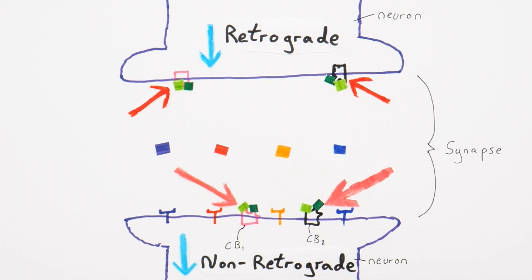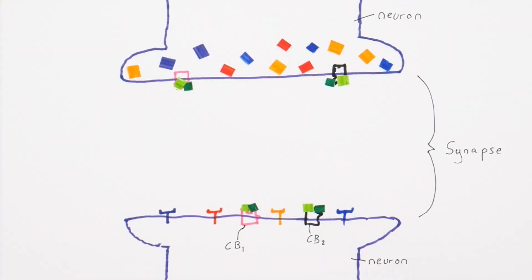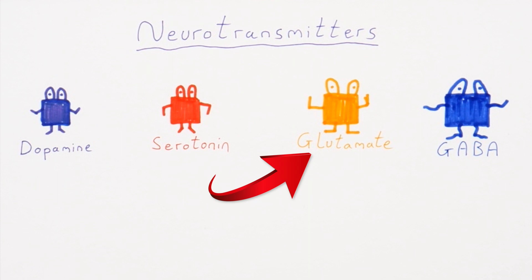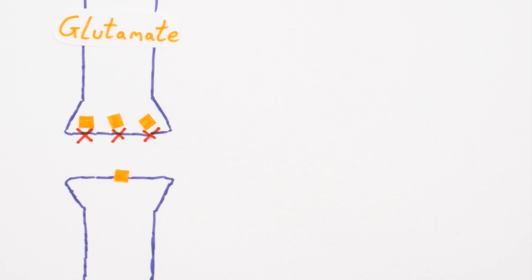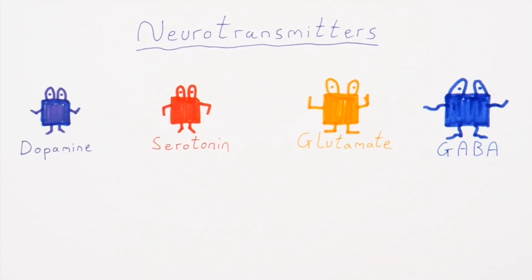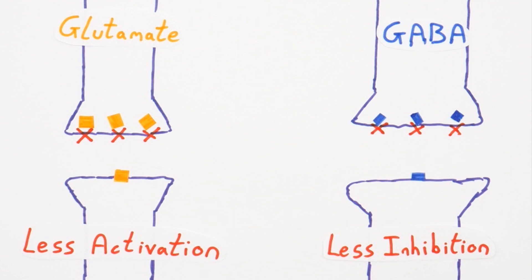This is called retrograde and non-retrograde signaling. Because cannabinoids can bind to both neurons, they act as a kind of dimmer switch. Cannabinoids generally reduce the quantity of neurotransmitters released, preventing them from binding, therefore dimming signals across the synapse. They can reduce glutamate — which causes activation — meaning less activation. But they can also reduce GABA, which causes inhibition, so less GABA means less inhibition, which means more activation. You can see how this gets complicated — increased or decreased activity in different parts of the brain.